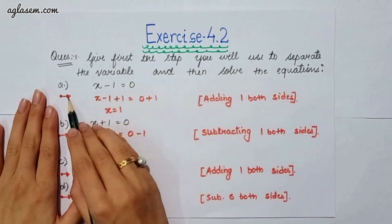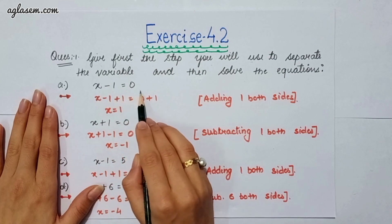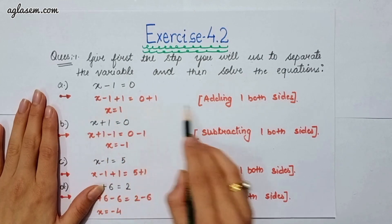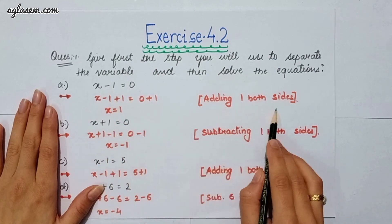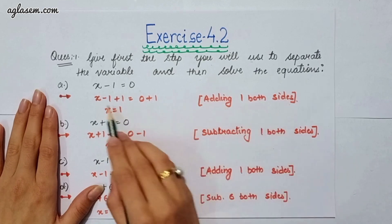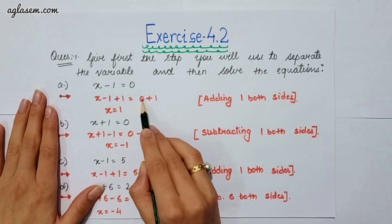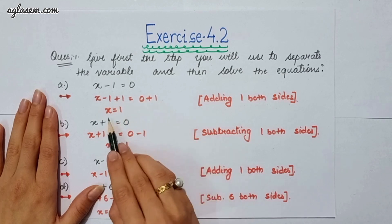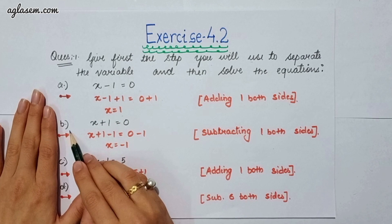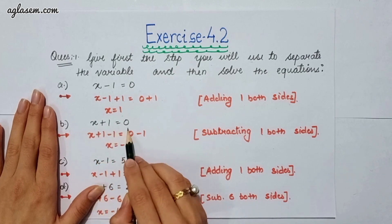The first part says x minus 1 is equal to 0. The answer is: we first have to add 1 on both sides, that is x minus 1 plus 1 is equal to 0 plus 1, which gives x as 1. The second part says x plus 1 is equal to 0.